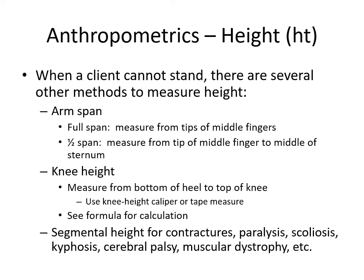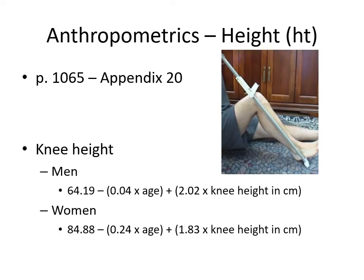We can also use segmental height for contractures, paralysis, scoliosis, kyphosis, cerebral palsy, muscular dystrophy, etc. In these cases we measure from heel to knee, knee to hip, hip to shoulder, and so forth — measuring height in segments. There is a formula in the book's appendix for knee height, and there is a knee height caliper available on campus so you would plug that measurement in to estimate height.